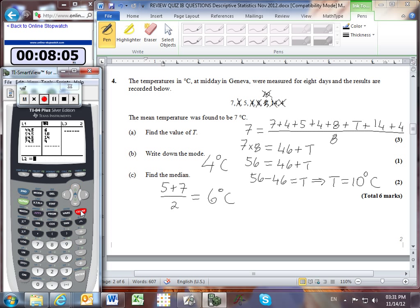Could also use one-var stats. Clearing the old lists and entering the new data: 7, 4, 5, 4, 8, 10, 14, and 4. Running stat calc, one-var stats on list 1, scrolling down confirms the median is 6.